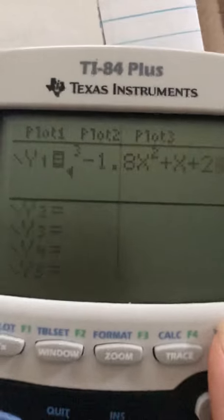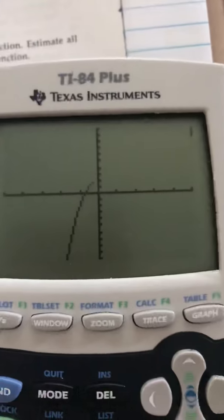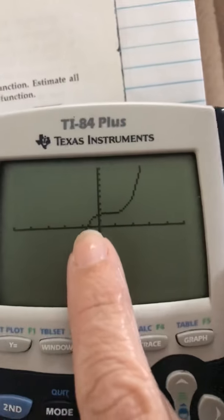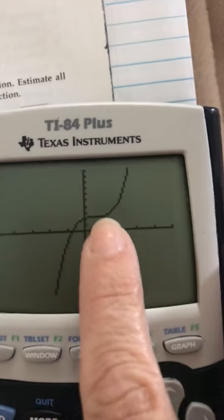Minus 1.8 x squared plus x plus 2. So I've got it in my calculator. And now I'm going to graph it. I'm staying in there. I want my maxes and my mins. There we go. It's the third degree. I see right here is probably a max. And here's a min.